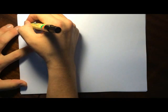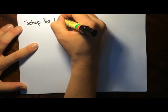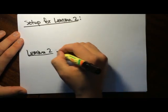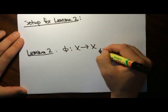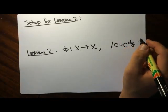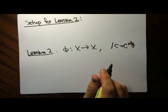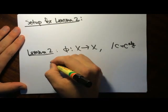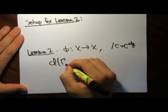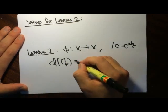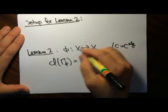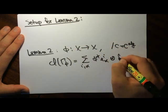Now I give the second lemma. Here's the setup: we take an endomorphism over C. The class of the graph of this function is going to be equal to the sum — we pull back basis elements and tensor with their dual basis elements. This is important because of the push-pull formula.